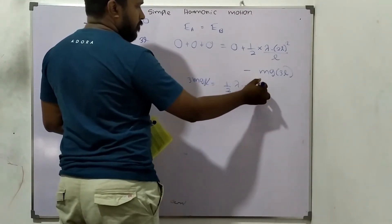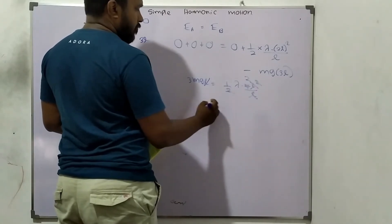So by the way, E is 2L, natural length minus this is 3L. Mg 3L. This is 3L. Mg 3L.